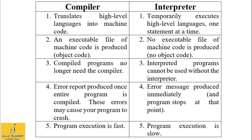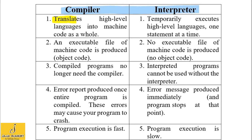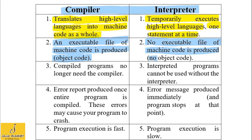An important exam question is the difference between compiler and interpreter. A compiler translates high-level language into machine-level language as a whole in one step, whereas an interpreter translates the program line by line, one statement at a time, and temporarily executes it. A compiler generates an executable file — the object code. But in the case of an interpreter, no executable file of machine code is produced; no object code is generated.